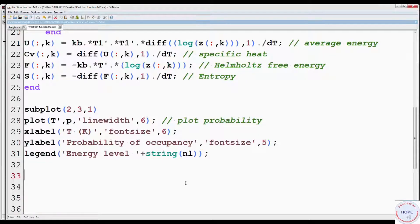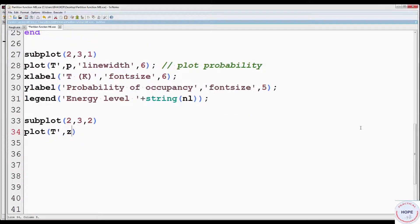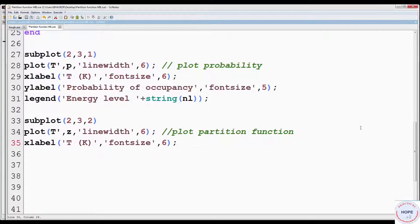Then we have to plot partition function, so subplot 2 comma 3 comma 2. Plot T prime comma Z line width 6. X label T bracket K font size 6. Y label partition function font size 6. Set different number of particles as legends.